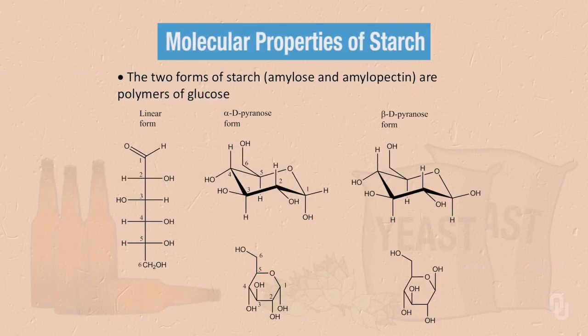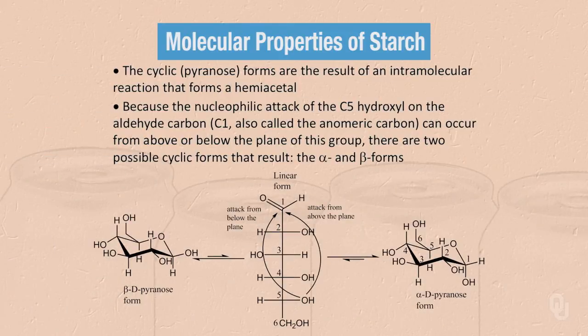To remind ourselves of the molecular properties of starch, we first have to start with the building block, which is glucose. As you may recall from the carbohydrate discussion, glucose can exist in a linear form or in two different cyclic forms, which we call pyranose forms — an alpha-D pyranose form and a beta-D pyranose form. The cyclic, or pyranose forms, are the result of an intramolecular reaction that forms a hemiacetal.